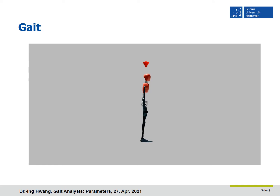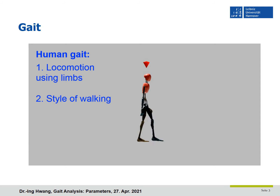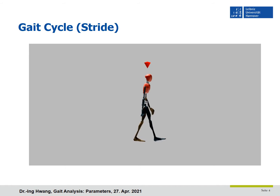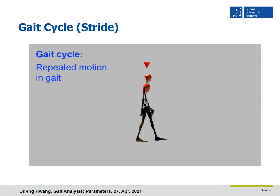First, we will talk about what is gait. As the avatar is working, gait is locomotion using limbs. Locomotion means the movement of an animal to move from one place to another — in this case, for humans. Gait also means the style of walking. Different people have different gait. During walking, humans repeat the same motion. The repeated motion is the gait cycle, also called stride, so that one gait cycle is one stride.